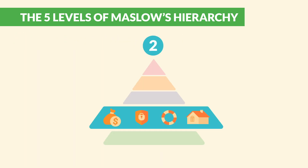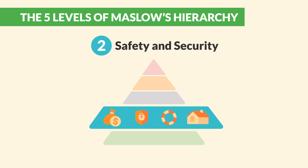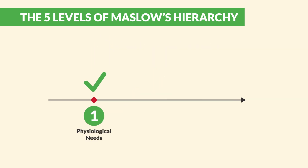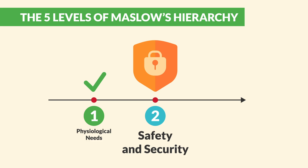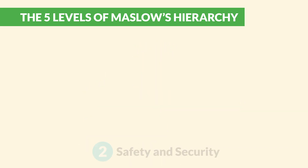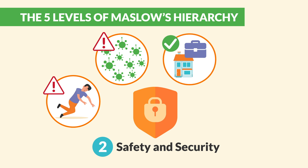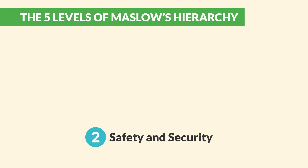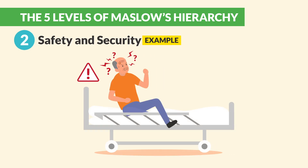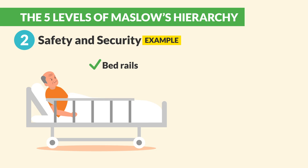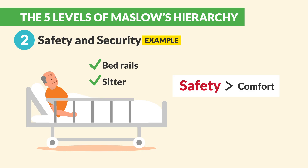Moving on to number two, safety and security. Once basic needs are met, next is protection from harm, physically and emotionally. This includes fall risk prevention, infection control, stable housing or job security, and freedom from abuse or trauma. For example, if we have a confused patient trying to get out of bed alone, you'd raise the bed rails and use a sitter or implement fall precautions. Because remember, safety always comes first before comfort.